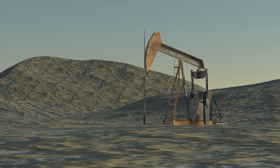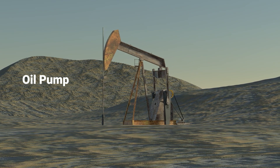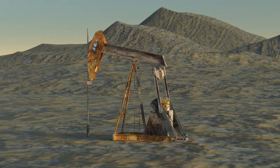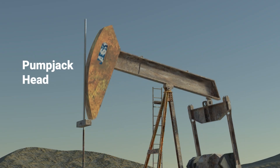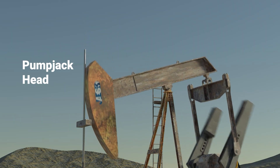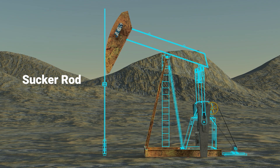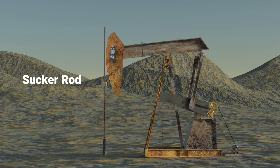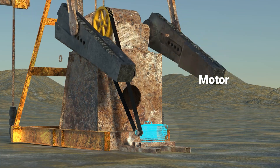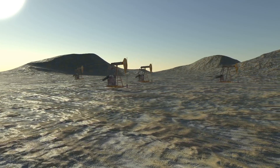One of the most iconic tools is the oil pump, also known as the nodding donkey. This mechanical device is designed to extract oil from reservoirs where there isn't enough pressure to flow naturally. It consists of a pump jack head — the swinging arm that generates the movement necessary for pumping — the sucker rod, which connects the pump to the underground reservoir extracting crude oil through alternating motions, and the motor, which powers the entire system ensuring continuous extraction. These pumps are often seen in oil landscapes working tirelessly to bring precious crude oil to the surface.